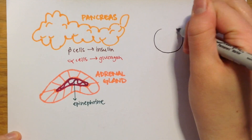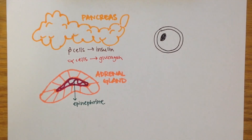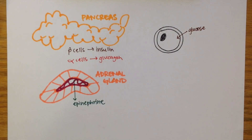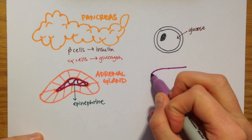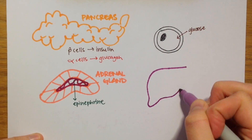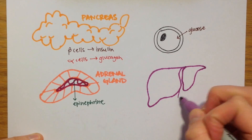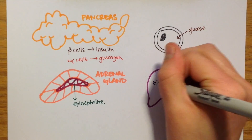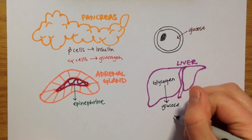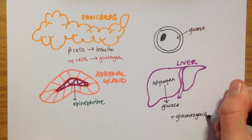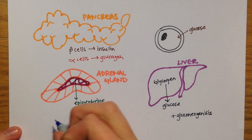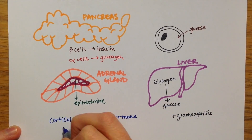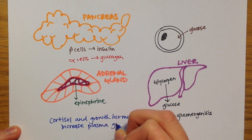Insulin is the primary hormone responsible for lowering glucose levels after a meal, and stimulates cells to transport glucose into the cell from the extracellular fluid. Both glucagon and epinephrine are the primary hormones for increasing plasma glucose in circumstances of fasting, stress, exercise, or starvation. They stimulate the liver to release glucose from glycogen and to convert lactic acid, glycerol, and certain amino acids to glucose through gluconeogenesis.